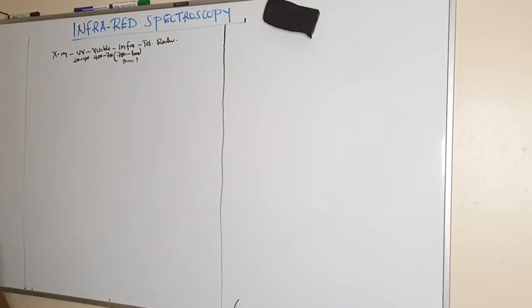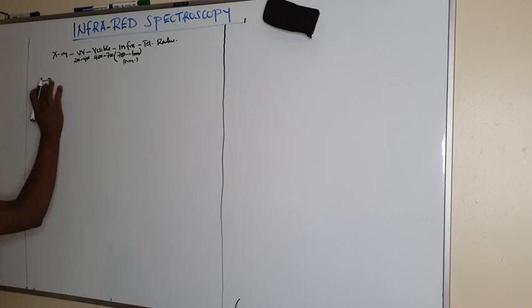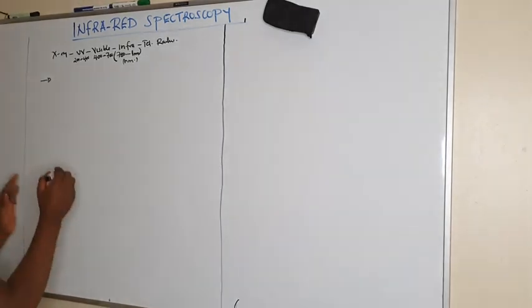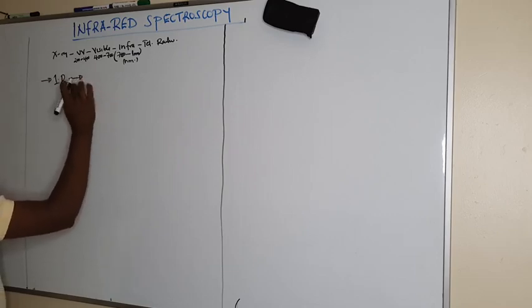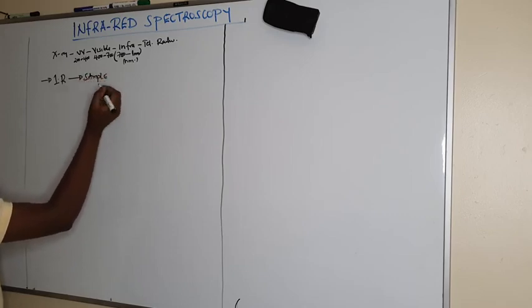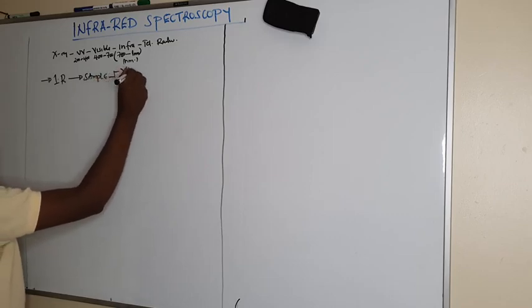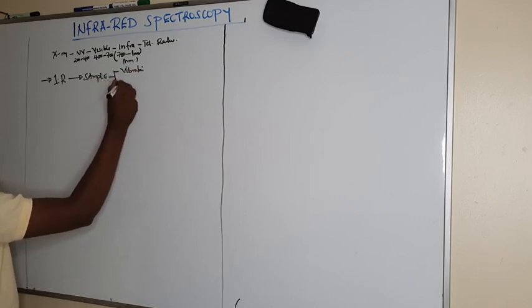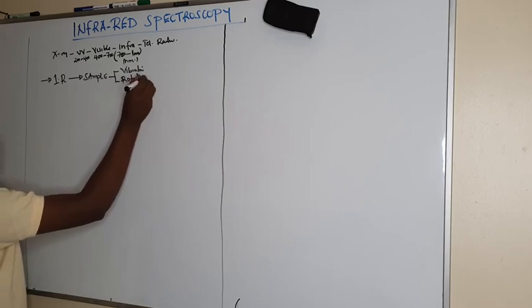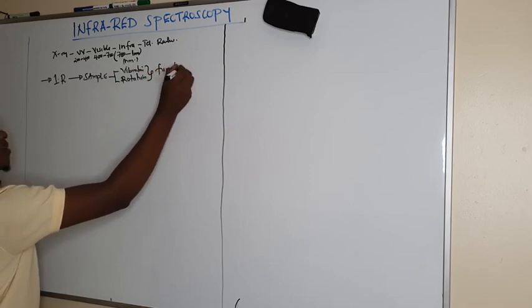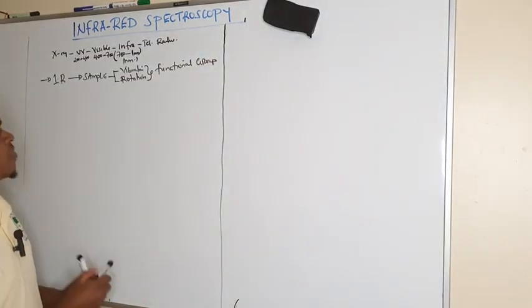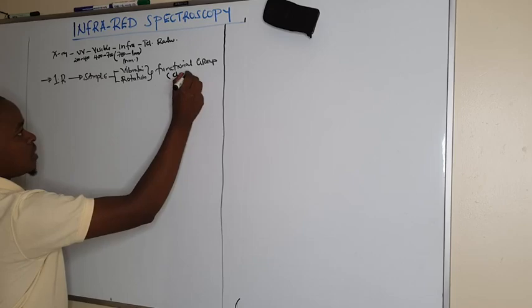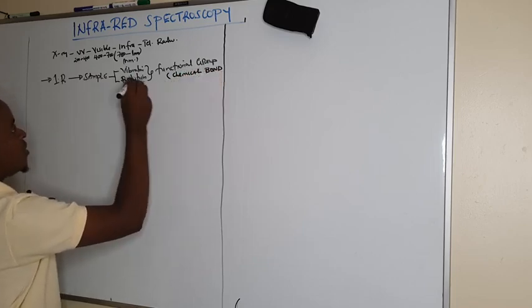This infrared spectrum — when infrared electromagnetic radiation passes through the sample or the solution, it causes vibration or rotation of functional groups around their chemical bond.